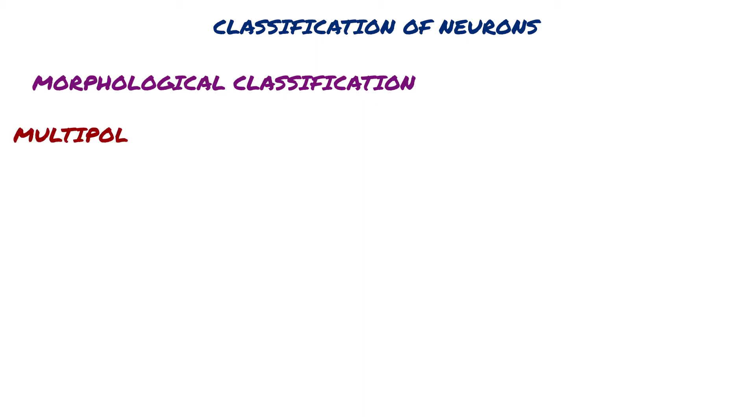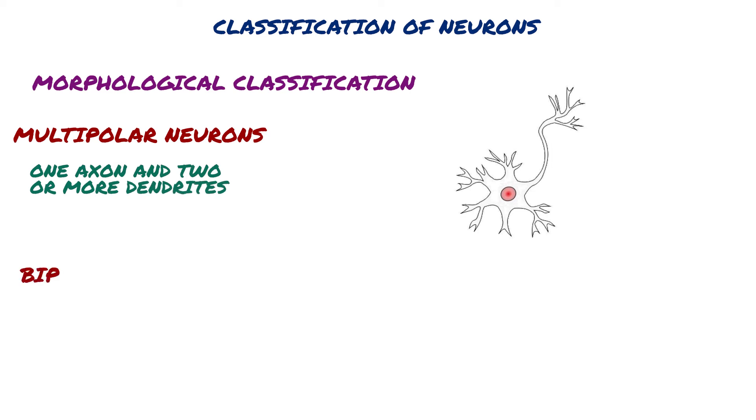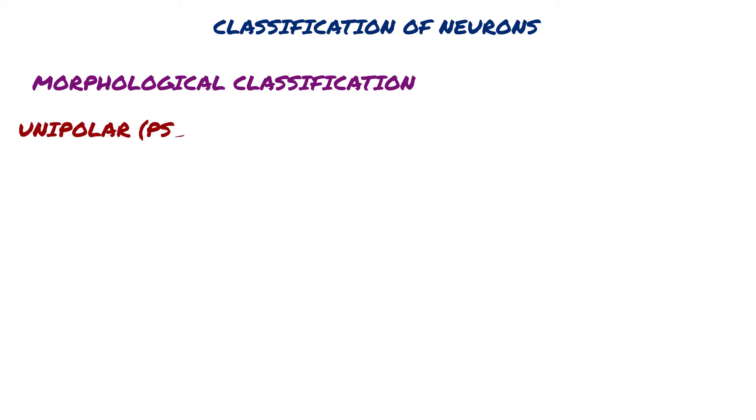Morphological classification: Multipolar neurons have one axon and multiple dendrites. Unipolar (pseudounipolar) neurons have one process that divides close to the cell body into two long processes: an axon and a dendrite.